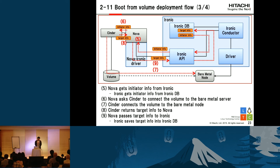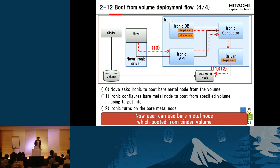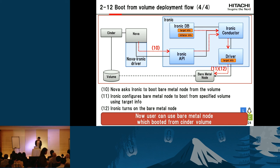With this initiator information, Nova calls Cinder and asks it to attach the volume to this initiator. Cinder attaches the volume to that bare metal node and replies to Nova with the target information. Nova passes this target information to Ironic, and Ironic saves it to the database. After that, Nova asks Ironic to boot the bare metal node from the volume. Ironic configures the bare metal node to boot from the specified volume using the target information, and then Ironic turns on the bare metal node. Now users can use the bare metal node which boots from a Cinder volume.